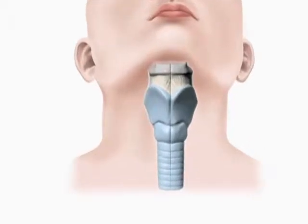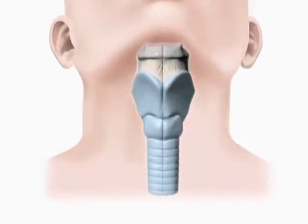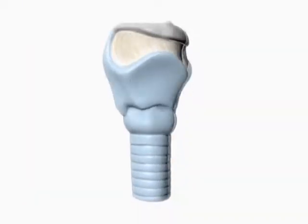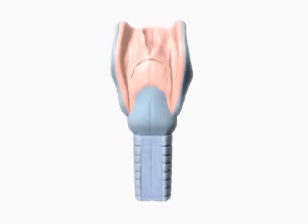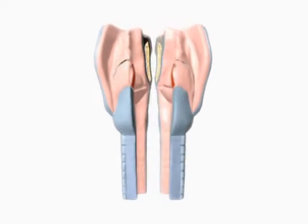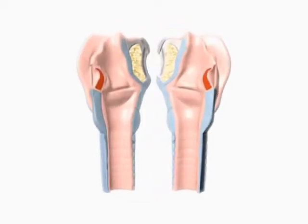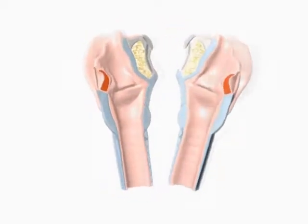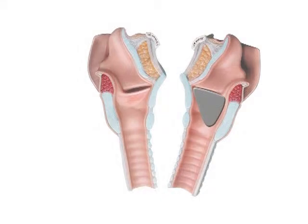Tumor resection will be illustrated in a patient with a T3 glottic cancer. The tumor is visible on the right vocal fold and it shows subglottic extension.